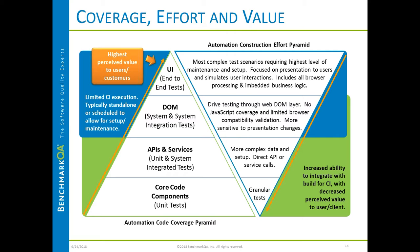When I look at automation value — my pyramid on the right — there's more code in the core components. If I have a lot of unit tests, which on the right are very small tests and very easy to build, I can get pretty good coverage. If I go up the pyramid and look at my APIs and services, it's a little more complex code and a little more complex to write — less coverage than those core components, but still quite a lot of coverage.